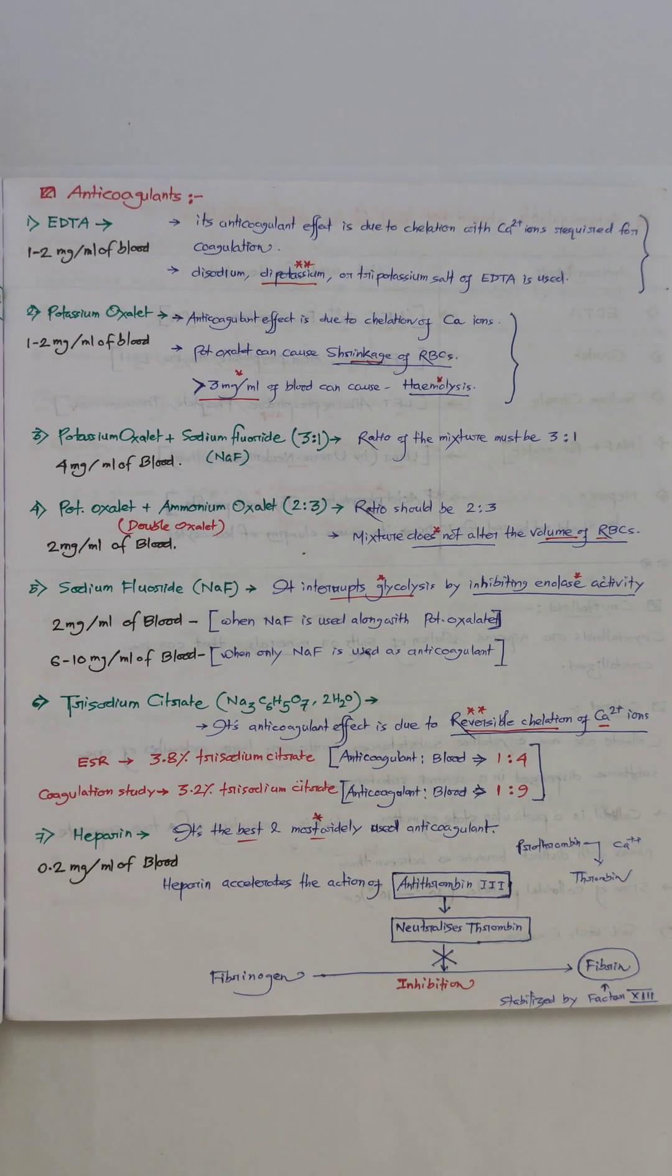For ESR, one part of anticoagulant is mixed with four parts of blood. But for coagulation profile or coagulation studies, one part of anticoagulant is mixed with nine parts of blood. This ratio is very important.